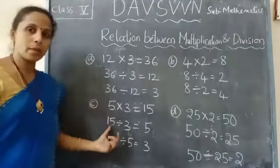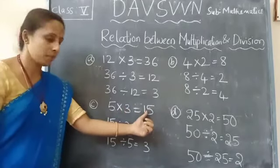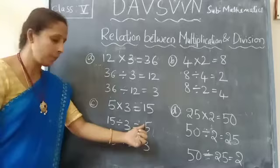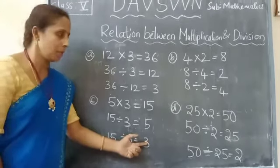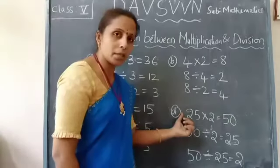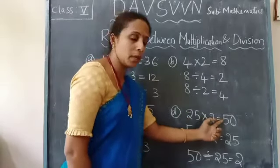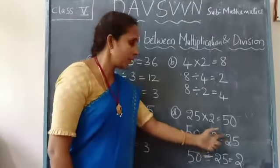Now let us see another example. 5 multiplied by 3 is 15. When 15 is divided by 3, it gives 5. And when 15 is divided by 5, it gives 3.